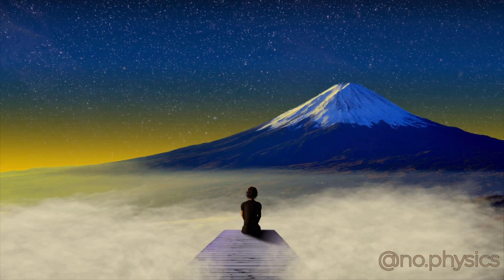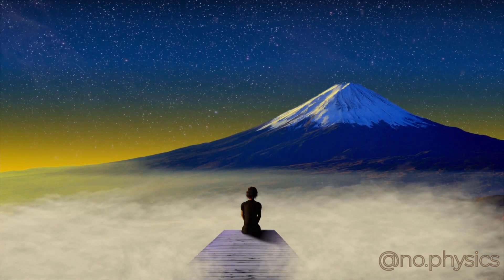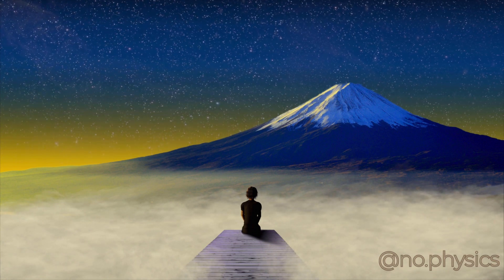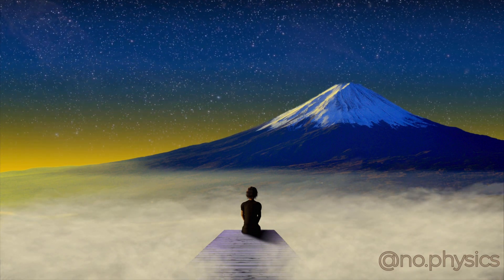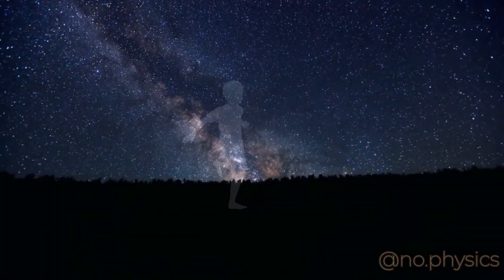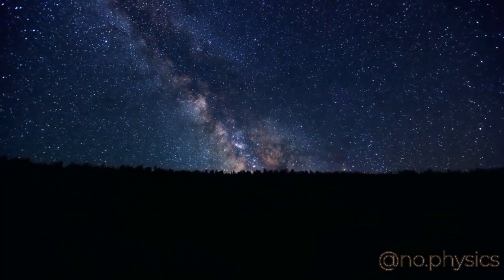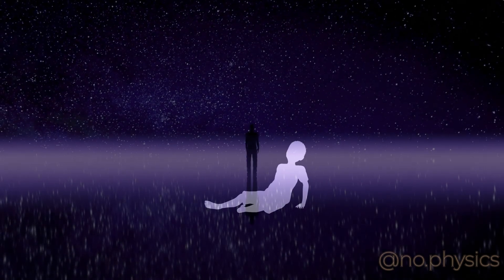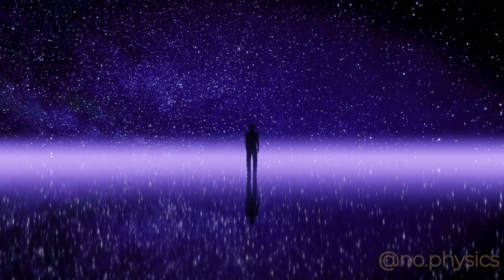Suppose you are standing in a field looking at the stars and your arms are resting freely at your sides. You will see that distant stars are not moving. Now if you start spinning, the stars go on wheeling around you and at the same time your arms are pulled away from your body. Why should your arms be pulled away when the stars are wheeling? Why should they hang freely when the stars do not move?